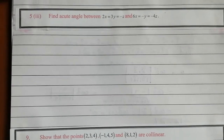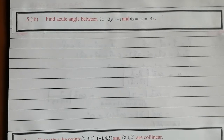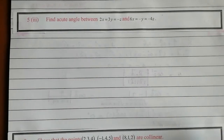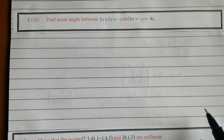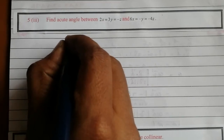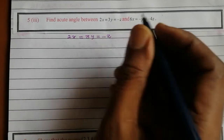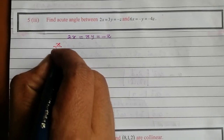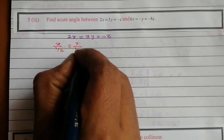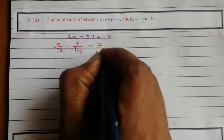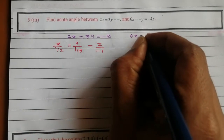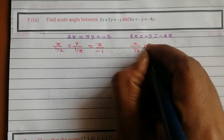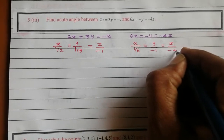Find the angle between the lines — both are in Cartesian form, so we use the standard Cartesian formula. The first equation 2x equals 3y equals minus z is rearranged as x over 1/2 equals y over 1/3 equals z over minus 1. The second equation 6x equals minus y equals minus 4z is rearranged as x over 1/6 equals y over minus 1 equals z over minus 4.